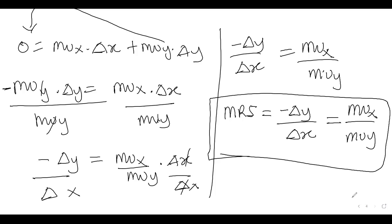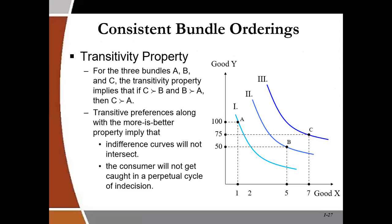The fourth property of the indifference curve is the transitivity property. This property states that if you prefer C to B, and you prefer B to A, then you must prefer C to A. This is also a reason why indifference curves do not intersect — if C is on the highest indifference curve and B is on a higher curve than A, then C must be preferred to A. Transitivity ensures a consistent and logical ordering of preferences.